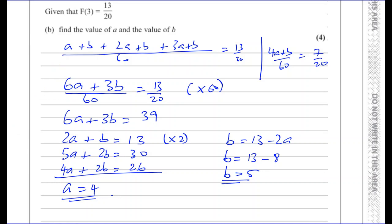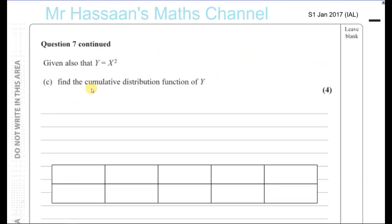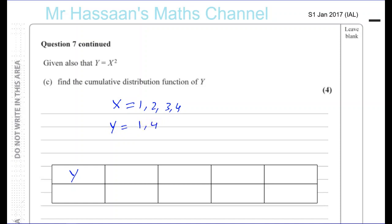Now part C says: given also that y equals x squared, find the cumulative distribution function of y. The values of x were 1, 2, 3, and 4, so the values of y are going to be 1, 4, 9, and 16.